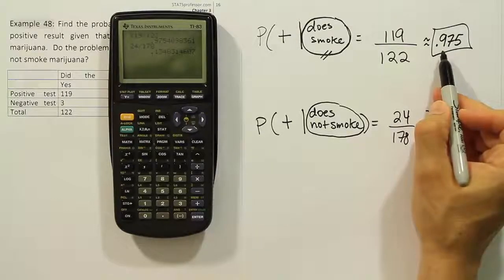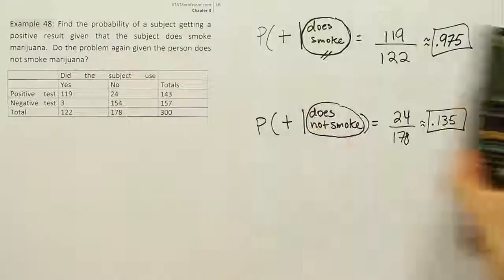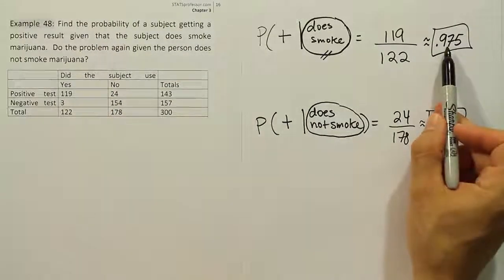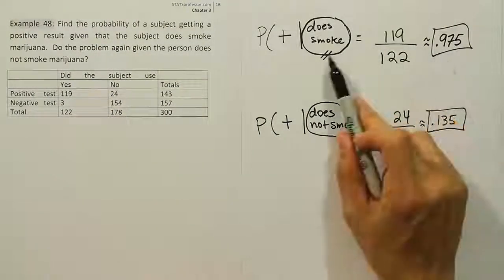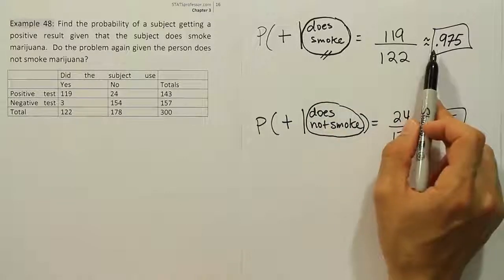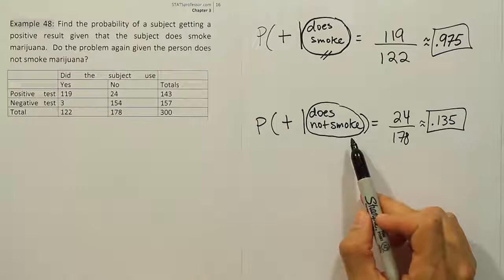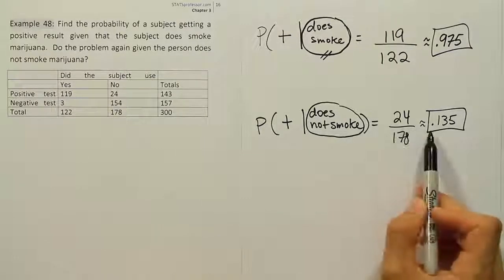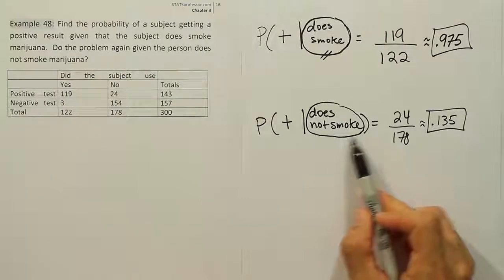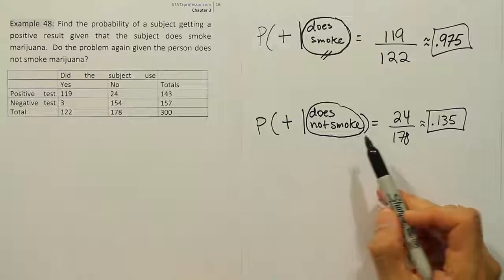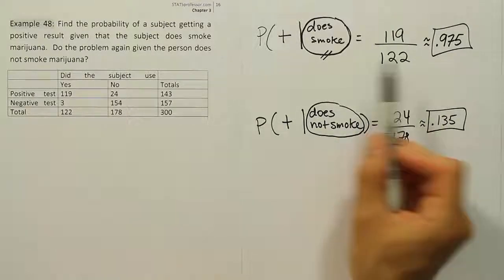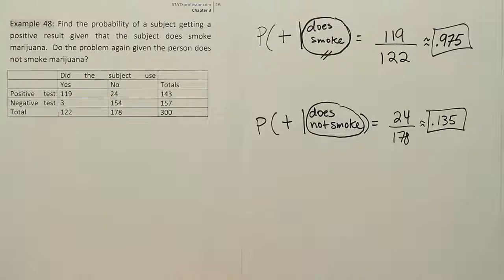So this first result, that's pretty good. 97.5% of the time, so almost 98% of the time, they would catch the users. So the test is pretty good at catching people who use marijuana. But you can see here, the tradeoff is that they label a lot of people who don't use marijuana drug users. And so that's bad because it ruins their reputation. It also makes it questionable whether you can trust a person's test results when they do get labeled a drug user.